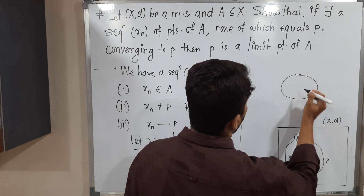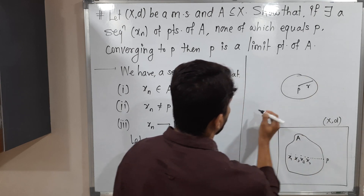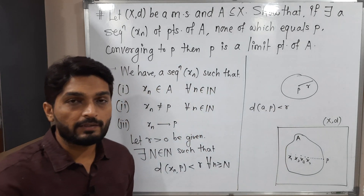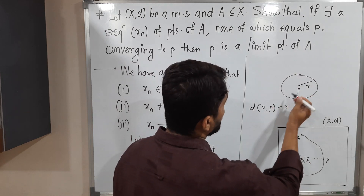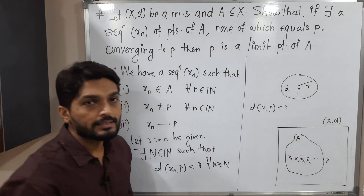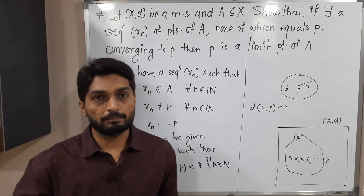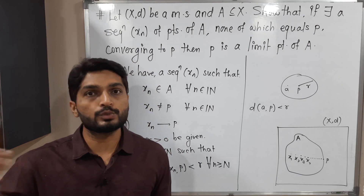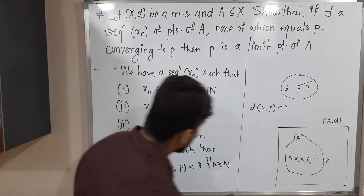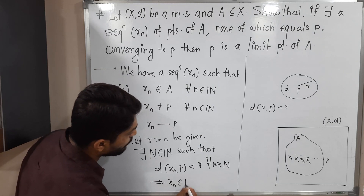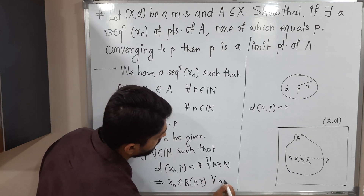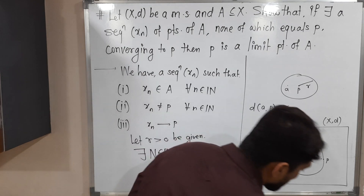Suppose we have a ball with center P and radius R. If the distance of a point from P is less than R, that means that point lies inside the ball. If the distance from P is greater than the radius, then the point lies outside the ball. Same situation we have here: the distance of Xn from P is less than radius R. So we can say that point Xn belongs to the ball with center P and radius R, for all n greater than or equal to capital N.